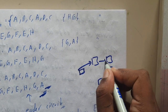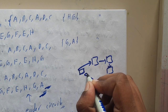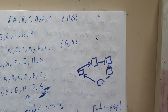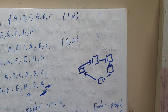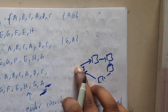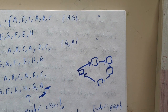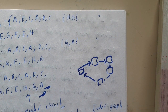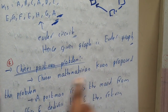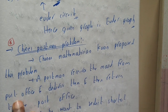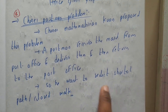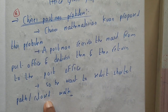The postman travels to all the areas, delivering mail and returning back to the post office. The postman should always select the shortest path - going from one place to another in less time while delivering most of the items. So Chinese mathematician Khan proposed this problem: a postman receives mails from the post office, delivers them, and returns back, wanting to select the shortest path or closed walk.